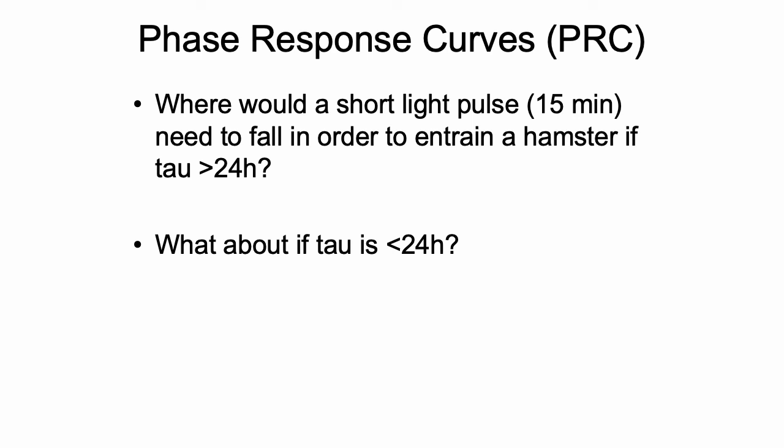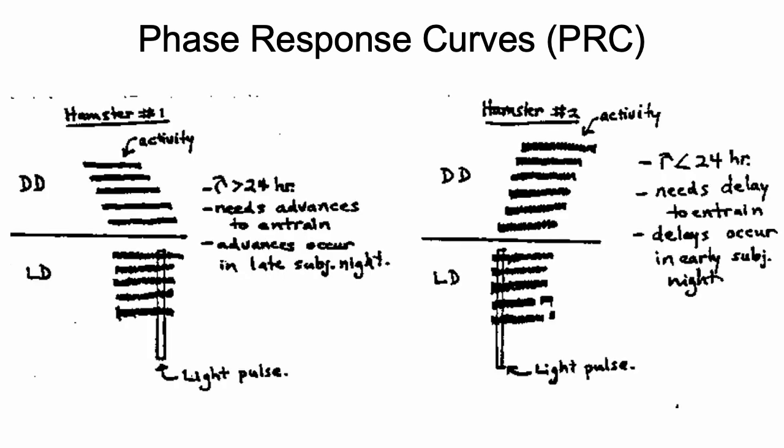So where would a short light pulse, let's just say arbitrarily 15 minutes, need to fall in order to entrain a hamster if its tau was greater than 24 hours? And alternatively, what about an individual that has a tau that's less than 24 hours? So think about that. You can pull up the PowerPoint and take a look at the phase response curve if that helps you, and think about what the actograms look like for an animal that has a tau greater than 24 hours and a tau less than 24 hours.